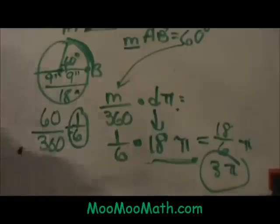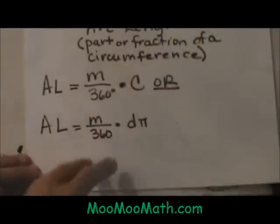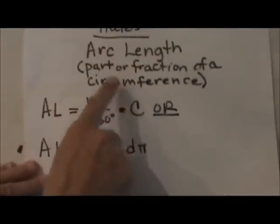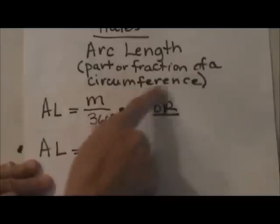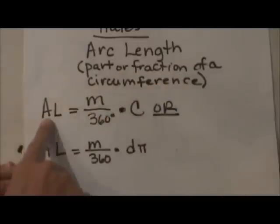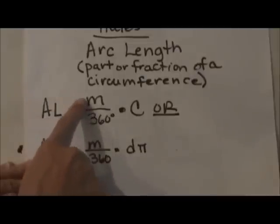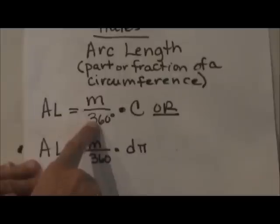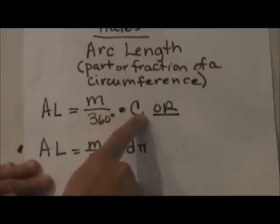Here are the rules for arc length. Remember arc length is a fraction of the circumference. To find the arc length you take the fraction, the measure of the arc over 360, and you can reduce that times the circumference.